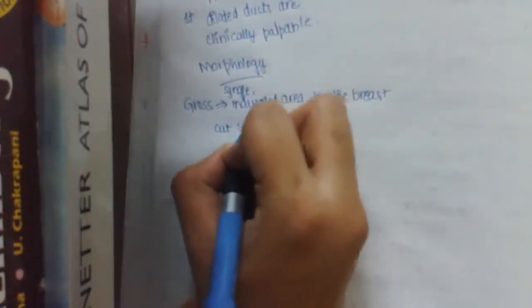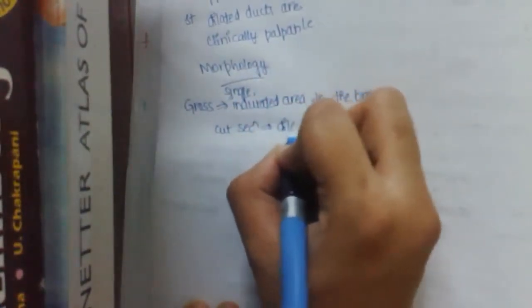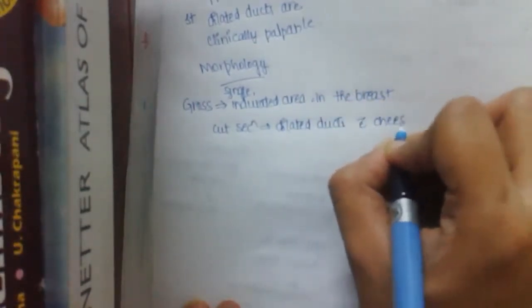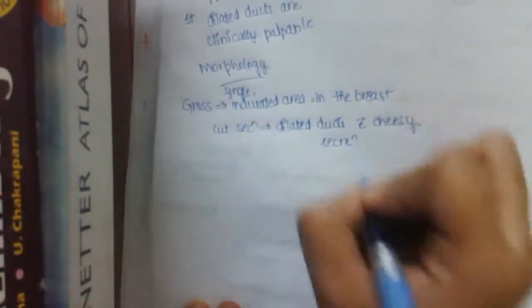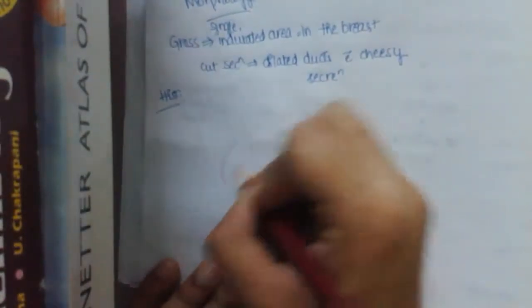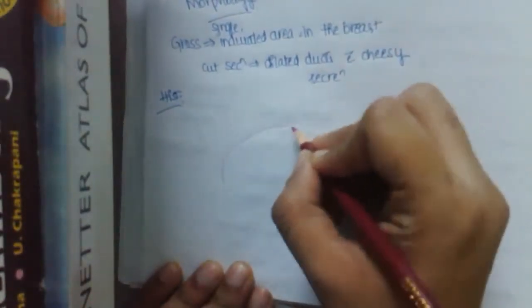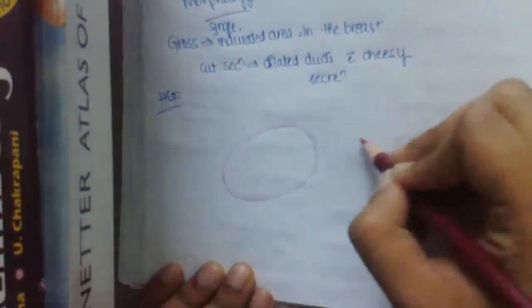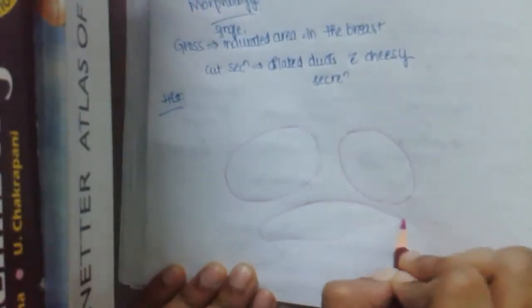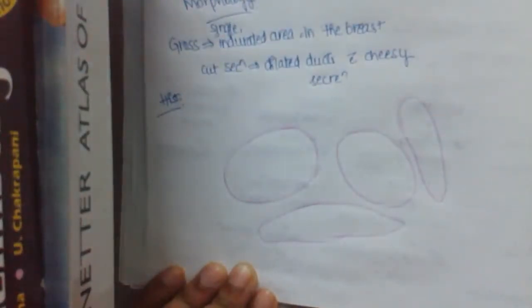Cut section, there may be dilated ducts, as I have said, with cheesy secretions. Let us draw the histological diagram. The first is, the ducts are dilated. So, the ducts are really dilated large. Only the ducts will not be this much size, but the ducts are dilated, with either necrotic or atrophic lining by flattened epithelium.